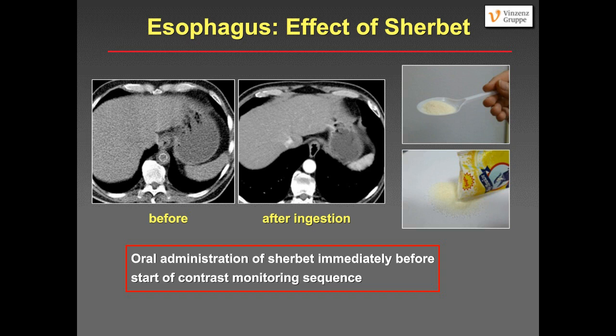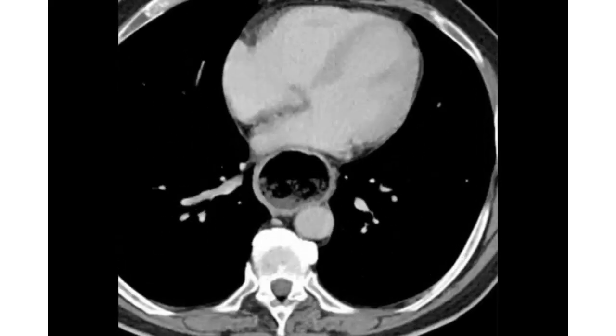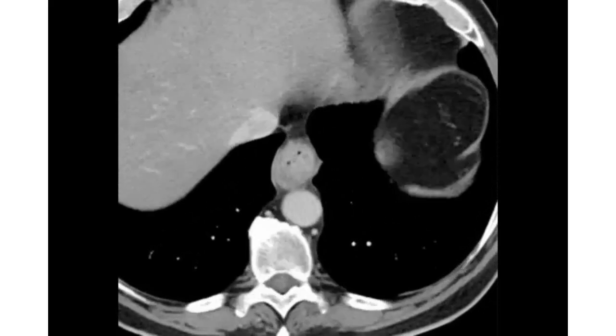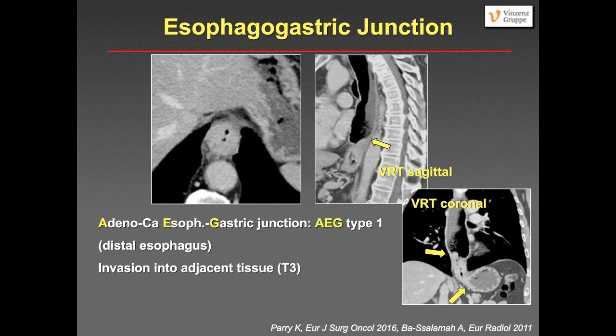A video shows good distension of the esophagus with air along with some ingested material, and you can see this distal esophageal cancer obstructing the esophagus. Giving sherbet nicely delineates the esophagus and allows assessment of the longitudinal spread of tumor. On the reconstructions in the axial image, you see the tumor invades into the adjacent fat tissue — this is a T3 tumor.